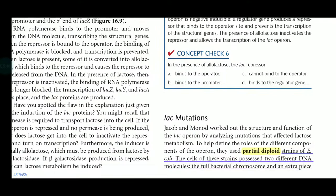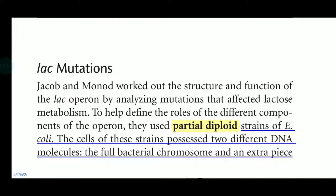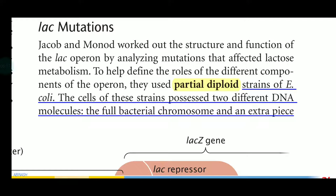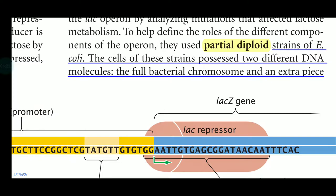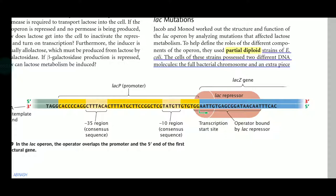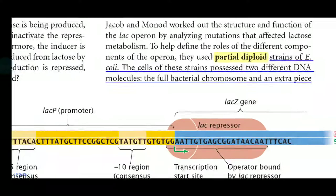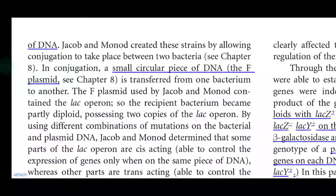Now, before we read about lac mutation, we need to know about the partial diploid, because we are dealing with the E. coli cell, which means we are going to deal with two kinds of DNA: the first is the normal full bacterial chromosome, and the second is the extrachromosomal DNA — what we call the plasmid, which is a small circular piece of DNA that also possesses genetic information.